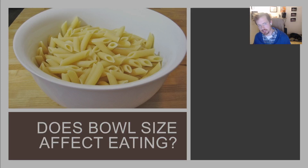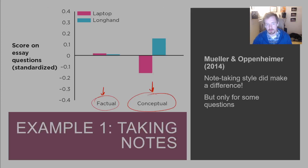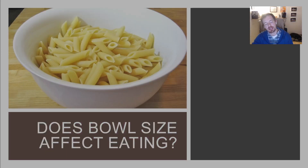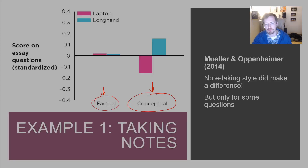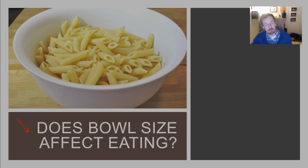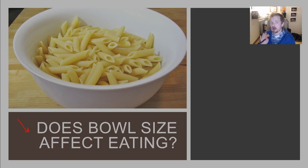The second experiment looks at whether bowl size affects eating. This study from 2012 will be the basis for our research article for this chapter. College students entered a controlled cafeteria where there was essentially one menu item: pasta. Half the students were given a medium-sized bowl and the other half a large-sized bowl to put pasta into.